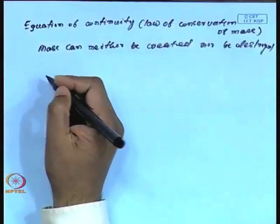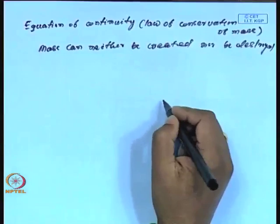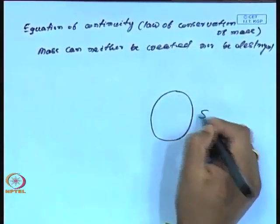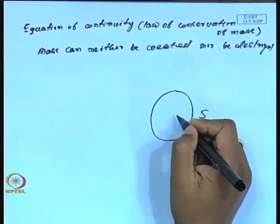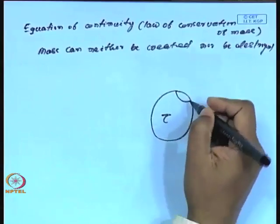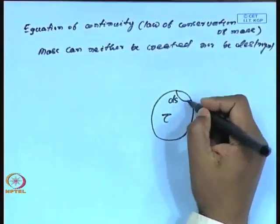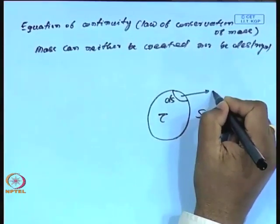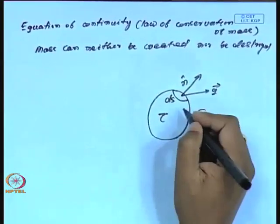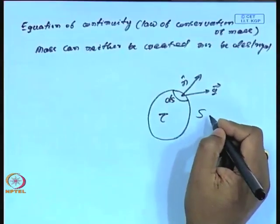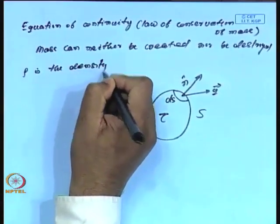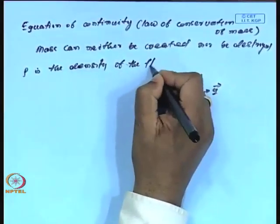Let us derive this mathematically. Consider any closed fluid surface. Let the volume of fluid in this region be τ, and consider any elementary surface element dS. On this elementary surface, let q̄ be the velocity of the fluid particle, n̂ be the outward drawn normal on this surface, and ρ be the density of the fluid.